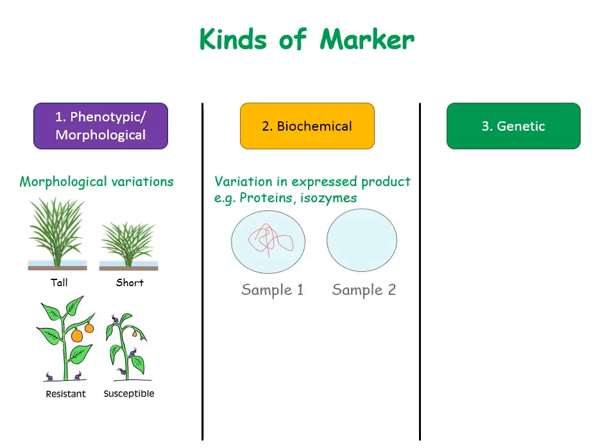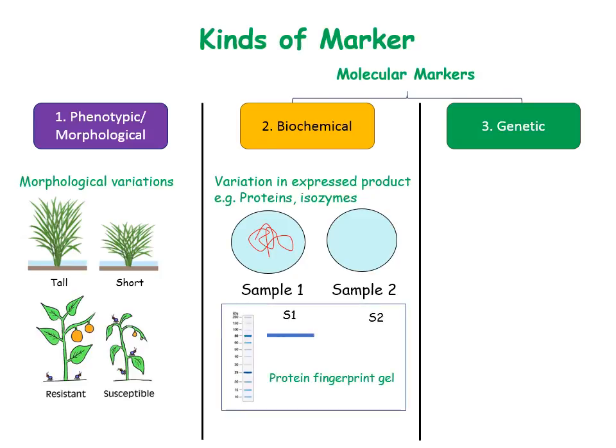For instance, blood samples of two individuals are checked for the presence of a disease resistance protein. Through different separation and identification techniques, it is found that the resistance protein is present in individual one but absent in individual two. The protein fingerprint on the gel shows a band of resistance protein in S1 but absent in S2, suggesting that individual one is the resistance type but individual two is not. Here, the disease resistance protein is a biochemical marker that distinguishes two individuals.